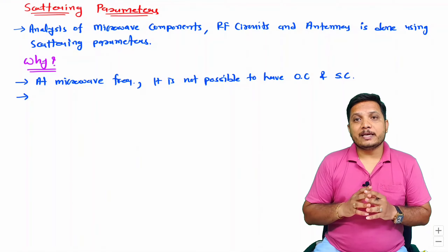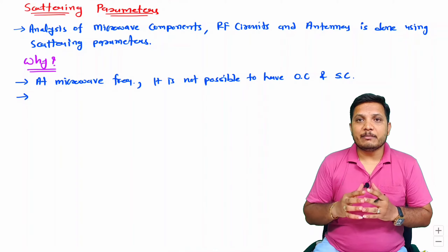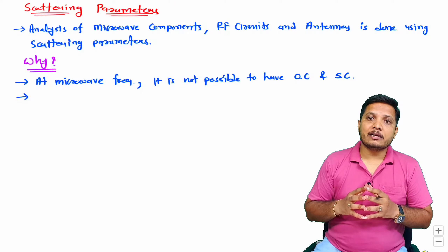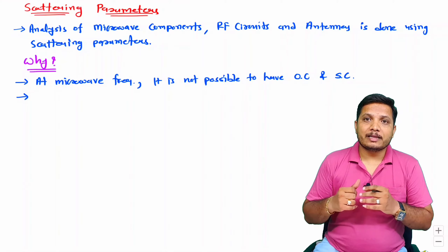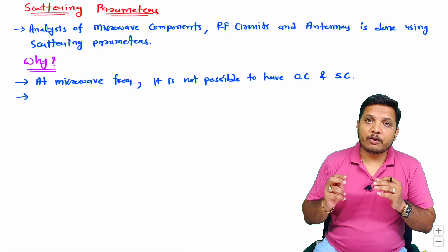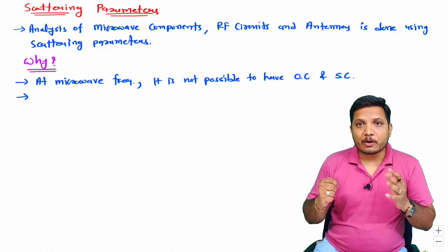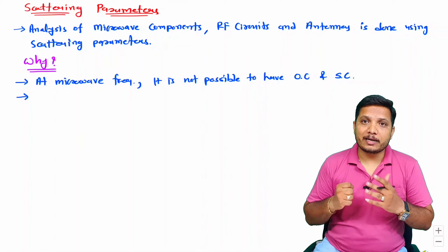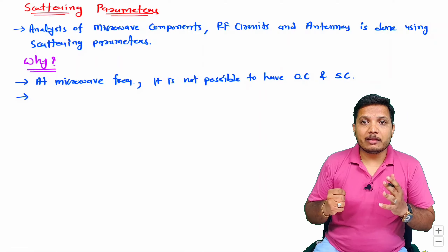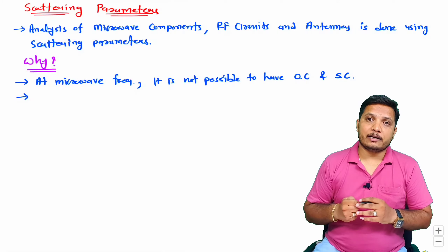If you have seen measurement of Y parameter, Z parameter, ABCD parameter, or H parameter, in that case you would have observed that you have been measuring exact values of voltage and current. But when we talk about microwave frequencies, equipments are not available which measure instantaneous voltage and current.